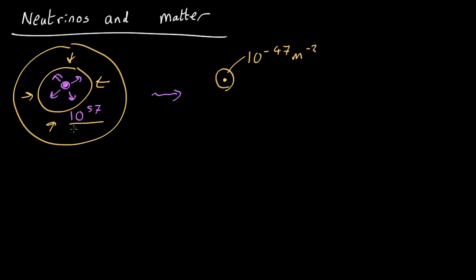So let's ask what is the total cross-sectional area of all the infalling gas? So each atom has 10 to the minus 47 square meters but there's a lot of atoms. How many atoms?